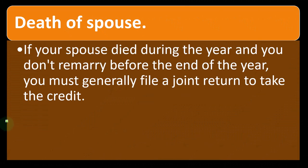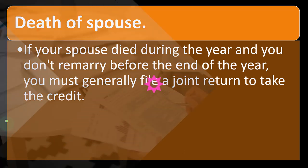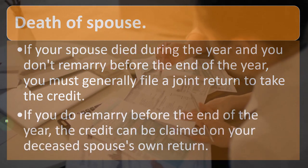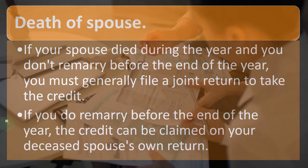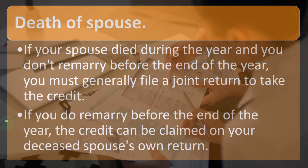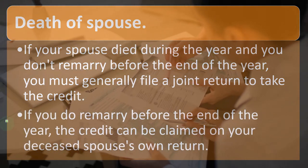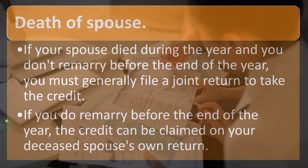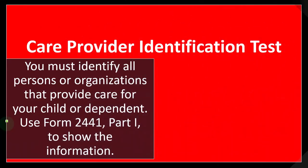Death of spouse: if your spouse died during the year and you don't remarry before the end of the year, you must generally file a joint return to take the credit. If you do remarry before the end of the year, the credit can be claimed on your deceased spouse's own return.